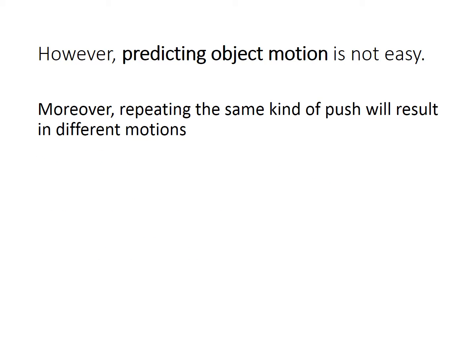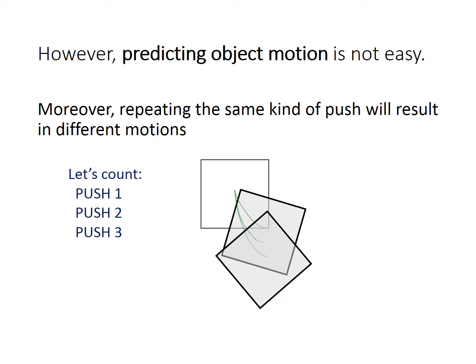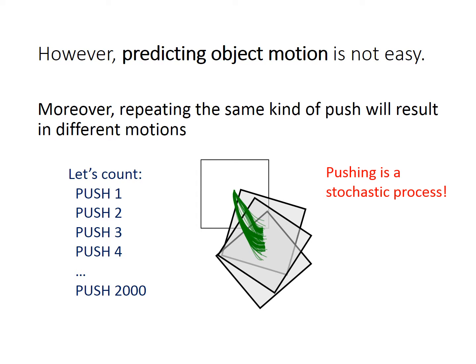Moreover, if we repeat the same kind of push on the object, the object motion will be different. Here is an example of several identical pushes. We repeat this for 2000 times and get these different trajectories. So pushing should be better modeled as a stochastic process.